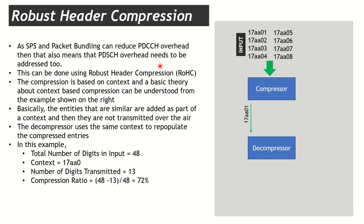Before going further, let's understand how context-based compression works. Using a basic example: let's say we have seven numbers — 17AA01 up to 17AA08. Normally, we would transmit all of them and the receiver would receive all of these numbers. But with compression and decompression based on context, it works differently.